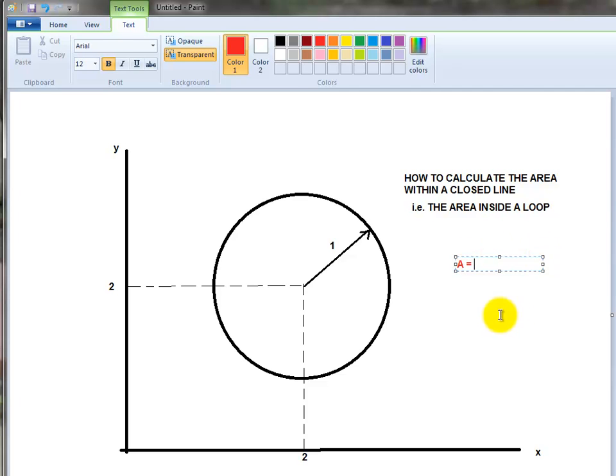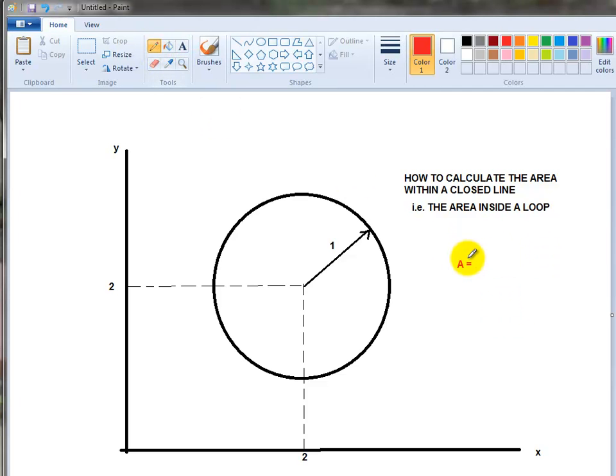So the area is π, and here the radius is 1, so it's π times 1 squared. The area of this particular circle is just π, so we should get an answer of 3.14 if it works.